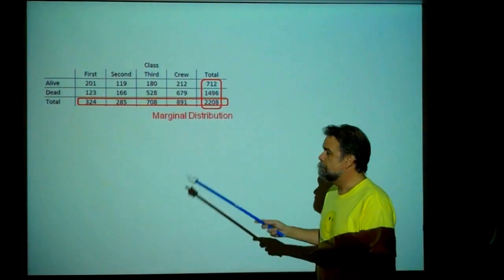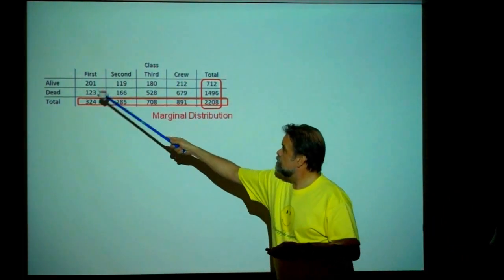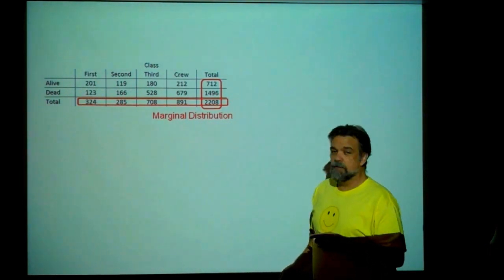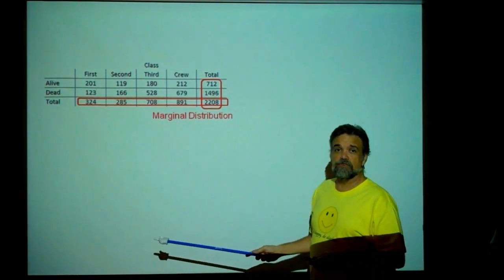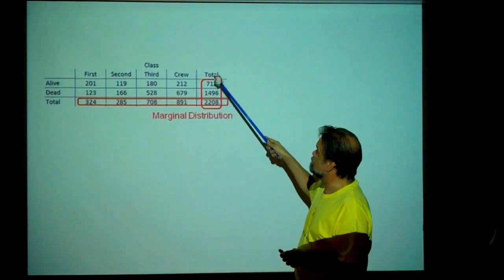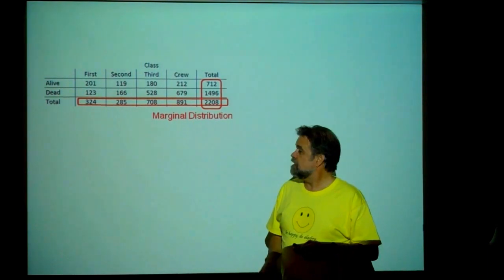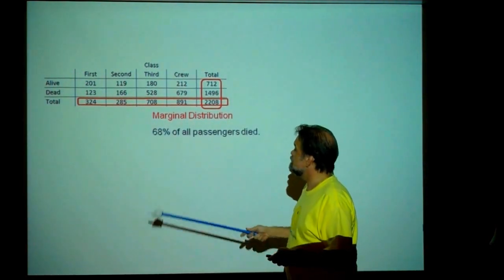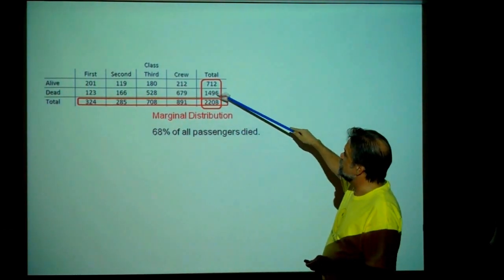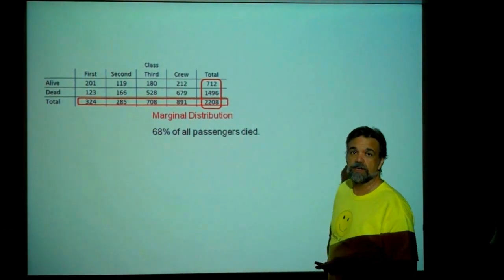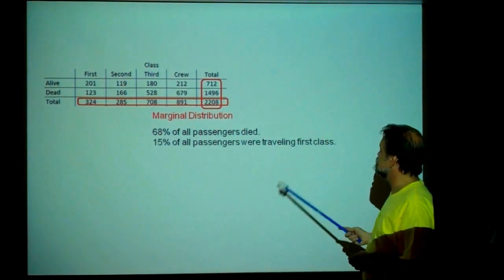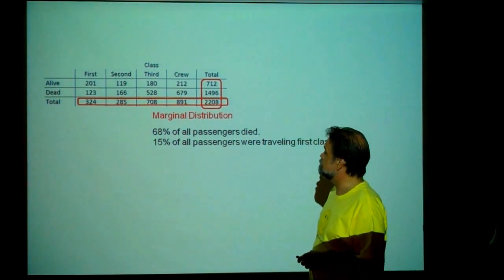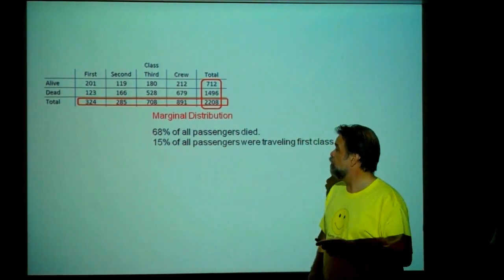Now let's look at marginal distributions and conditional distributions. The marginal distribution is the distribution found in the margins — the totals. It's looking at bivariate data and ignoring one of the variables. From the marginal distribution we can see things like: 68% of all passengers died, or 15% of all passengers were traveling first class.